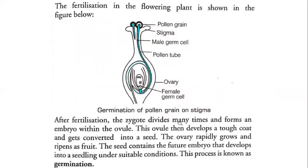After fertilization, the zygote divides many times and forms an embryo within the ovule. This ovule then develops a tough coat and gets converted into a seed. Like the seed you have seen in chickoo or apple — with a tough coating — it develops from the ovule. The ovary rapidly grows and ripens as fruit. So what we eat in the apple is the ovary, and the seed is inside. In mango, the 'guthli' is the seed, and the surrounding part is the ovary ripened as fruit.